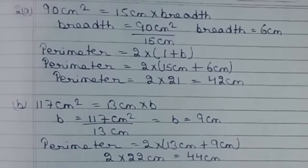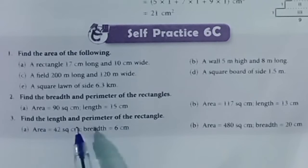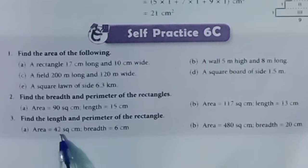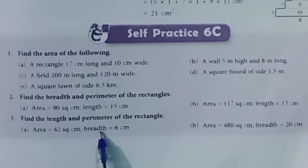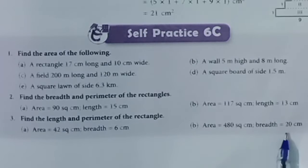Question 3. Find the length and perimeter of the rectangle. Part A: Area = 42, breadth = 6. Part B: Area = 480, breadth = 20.